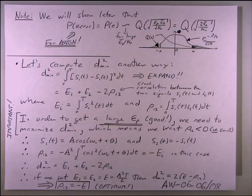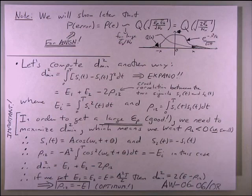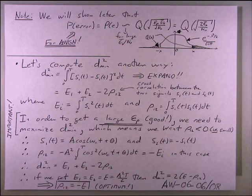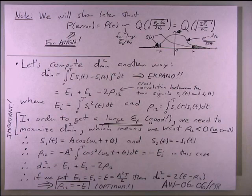This alternative approach lets you compute individual symbol energies first, then only calculate the pesky correlation integral to get d_min² — avoiding all the repeated trig math. Using this, the power efficiency for BPSK is again confirmed to be 4. To maximize ε_p, we want to keep the power efficiency as large as possible — and choosing a phase separation of 180° (antipodal) achieves this optimum.